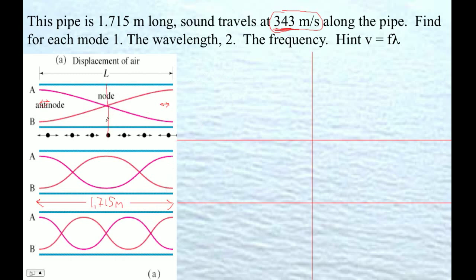Okay, so here, let's figure out this wavelength. Well, that's two-quarter wavelength, so we go 1.715 is equal to two-quarter wavelengths, right?